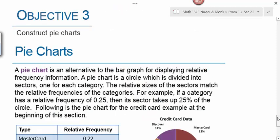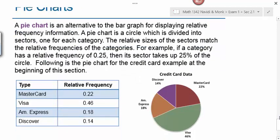The last objective, then, is to construct a pie chart. And as I mentioned earlier, I'm not going to have you construct the pie charts. Just understand how to read them and what goes into constructing a pie chart. A pie chart is an alternative to the bar graph for displaying relative frequency information. A pie chart is a circle which is divided into sectors, one for each category. The relative sizes of the sectors match the relative frequency of the categories. So, for example, if a category has a relative frequency of .25, then the sector size is going to be a quarter of the circle. Visa corresponds to 46% of the area of the circle.